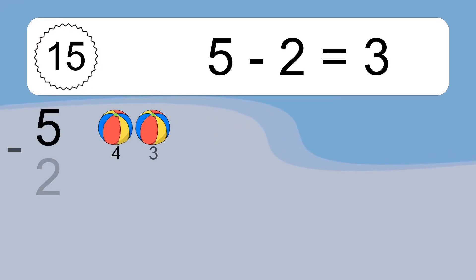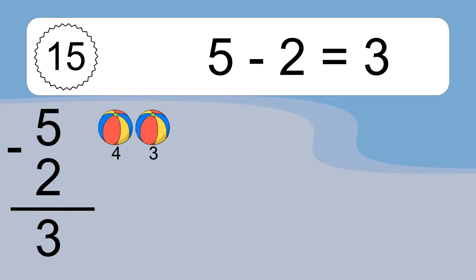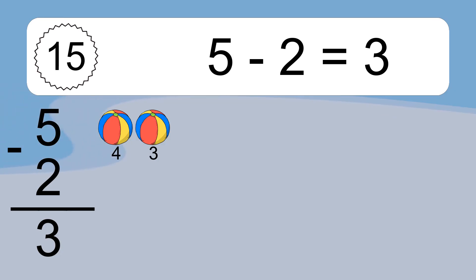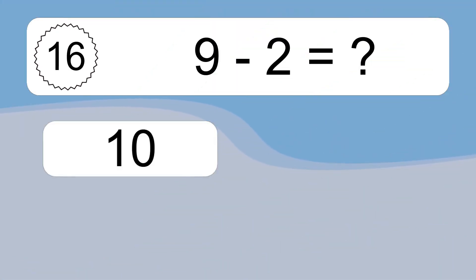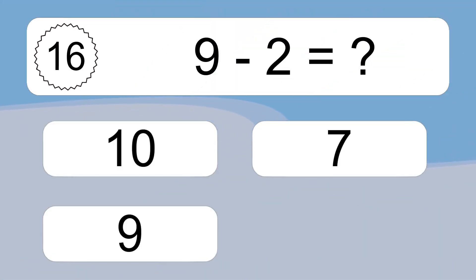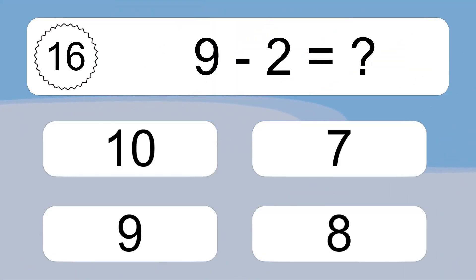5 minus 2 equals what? 5 minus 2 equals 3. Let's count it: 4, 3.